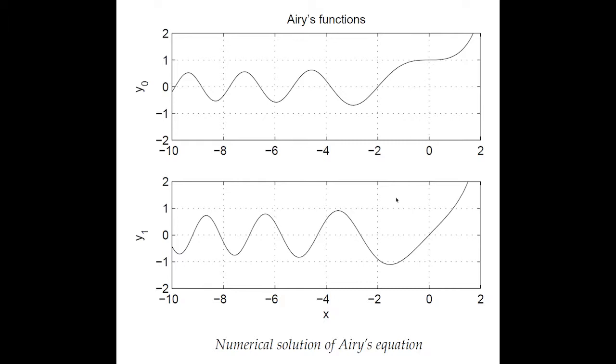The bottom graph is y1 of x versus x. If you look at x equals 0, you'll see y1 of 0 equals 0, and the derivative of that function at x equals 0 is 1.